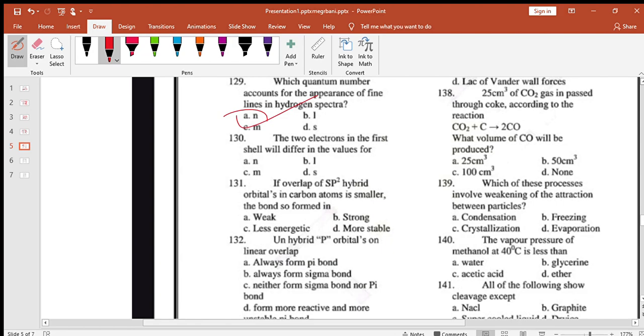Two electrons in the first shell: the principal quantum number is the same, the first shell is the same, s in one orbital is the same, but spin is different.